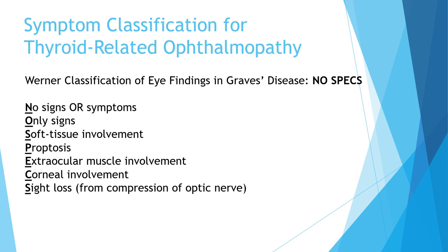There is a classification system for symptoms of thyroid-related ophthalmopathy called the Werner classification, which defines seven classes easier to remember with the acronym NO SPECS: N for no signs or symptoms; O for only signs — observable features as opposed to symptoms patients disclose; S for soft tissue involvement; P for proptosis; E for extraocular muscle involvement and limitation of eye movement; C for corneal involvement; and S for sight loss.